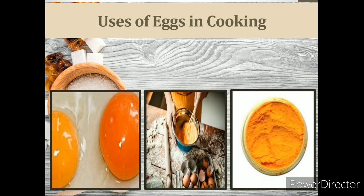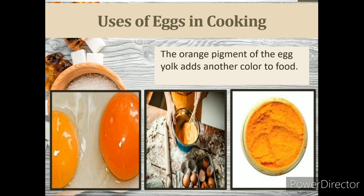The first use of eggs in cooking is as a food color. The orange pigment of the egg yolk adds color to food. Products in which eggs are used contribute to their flavor and color. Examples are cakes and custards.